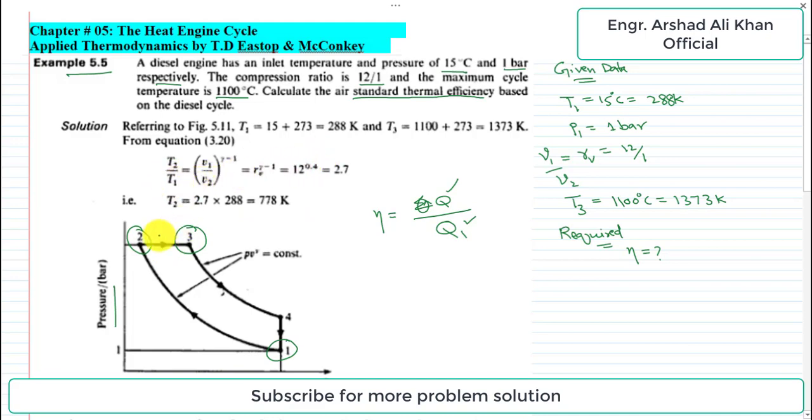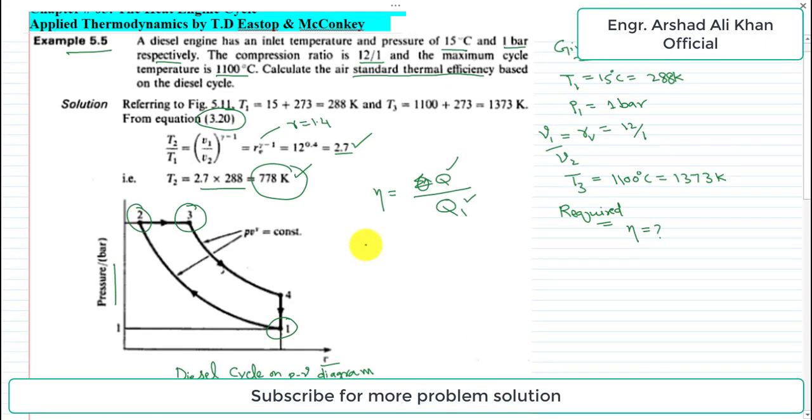To find temperature T2, we use the expression T2 by T1 equals (V1 by V2) to the power gamma minus 1. This is derived in equation 3.20. V1 by V2 is the compression ratio, which is 12. So T2 by T1 equals 12 to the power 0.4, which equals 2.7. Therefore T2 equals 2.7 times 288, which equals 778 K.